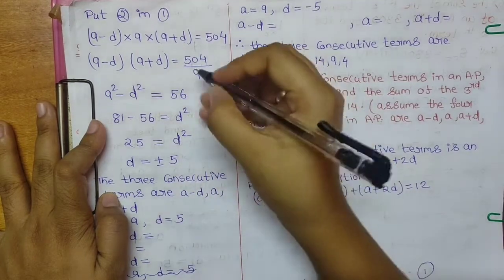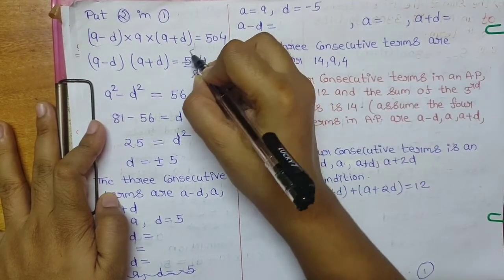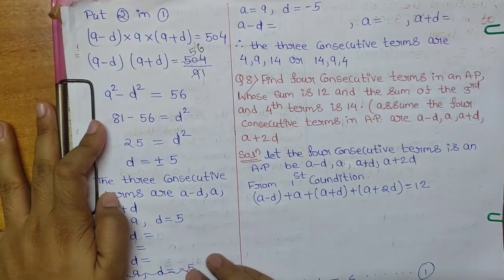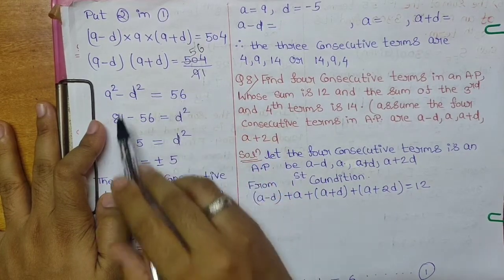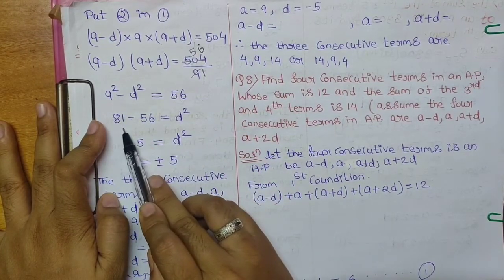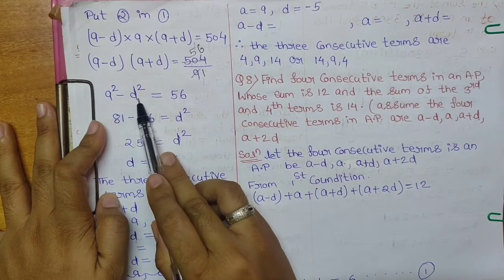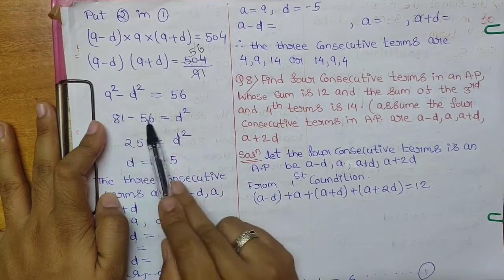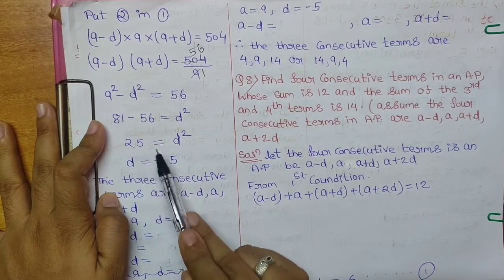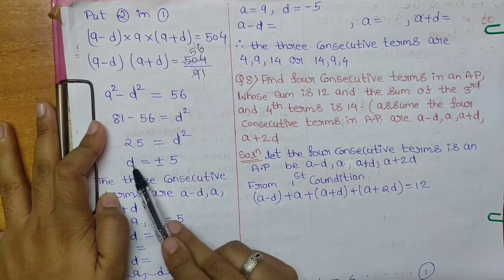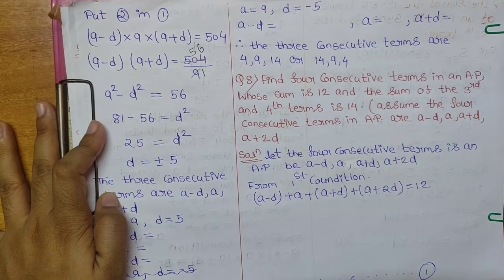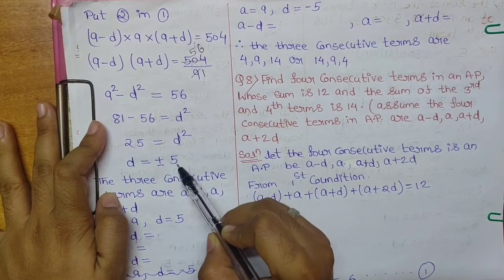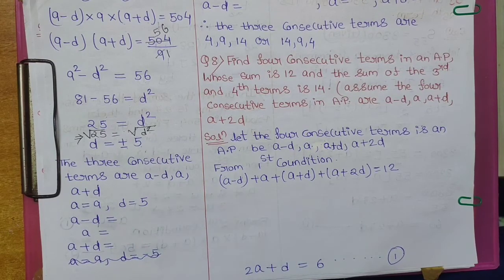Simplifying: 81 − D² = 56, so D² = 81 − 56 = 25. Taking the square root of both sides gives D = ±5.